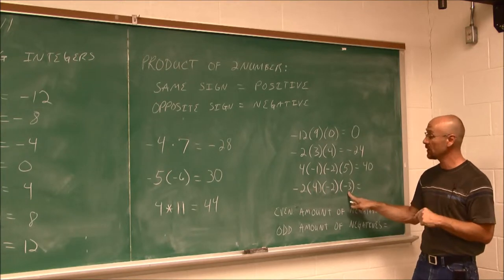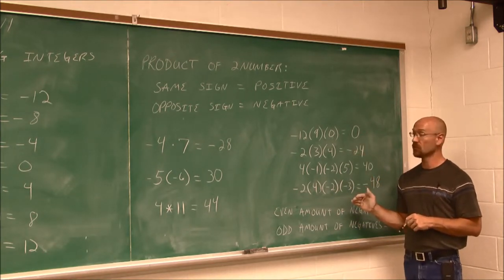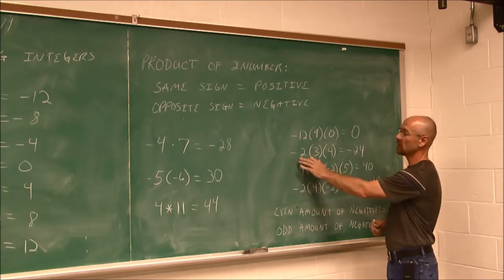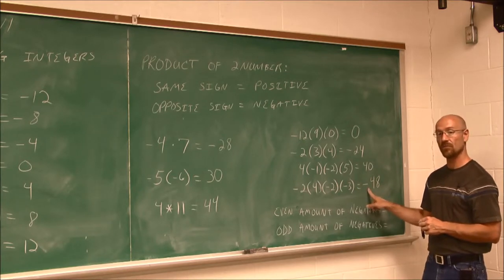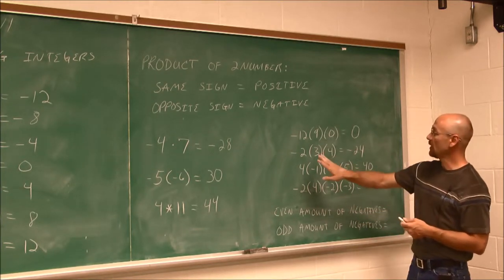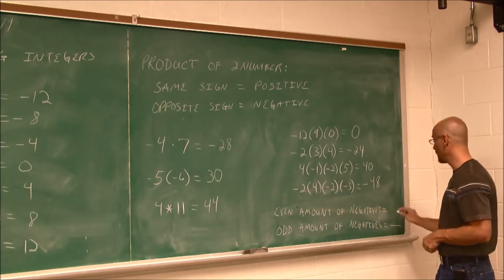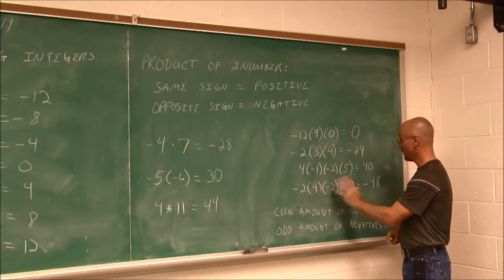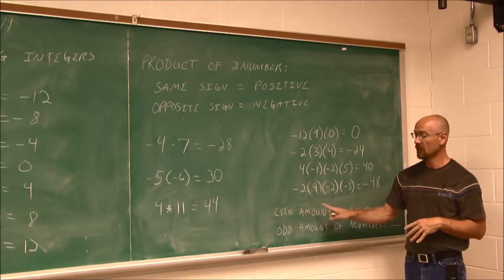Positive 16 times negative 3 — now we only have one negative, so we get negative 48. Do we see a pattern? One negative gave a negative answer. Two negatives gave a positive answer. Three negatives gave a negative answer. When we have more than two numbers and it's just multiplication, we can assess the sign right from the start: odd number of negatives gives a negative value; an even number of negatives gives a positive value. Four negatives, for example, would give a positive answer because 4 is even.